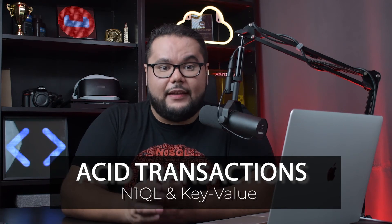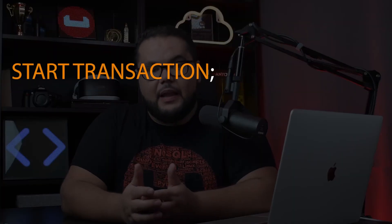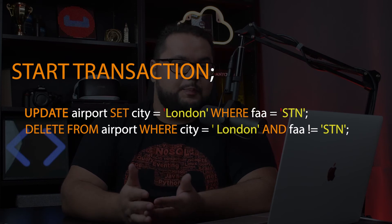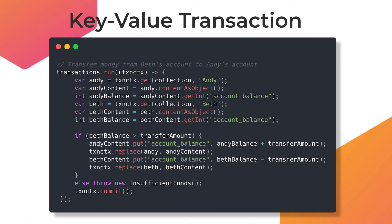Couchbase supports two types of ACID transactions: N1QL and key-value. The N1QL one is very similar to transactions in relational databases where you specify a start transaction, execute some operations, and then commit at the end. The key-value transactions is a special implementation that has no central coordination and no single point of failure, which makes it a better fit when you need to execute transactions at scale. We will deep dive onto this topic in another video, but for now just bear in mind that you should choose key-value transactions or N1QL transactions whenever possible.